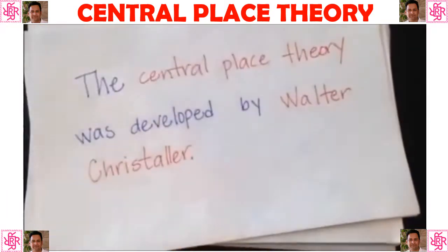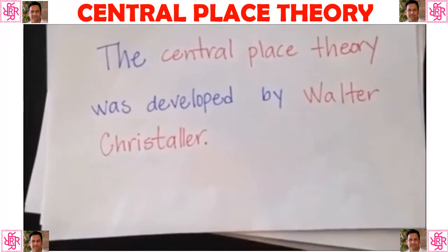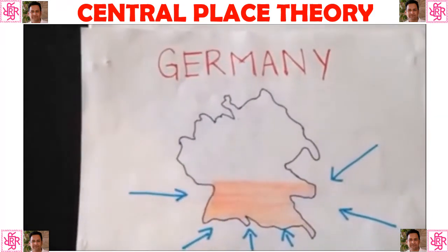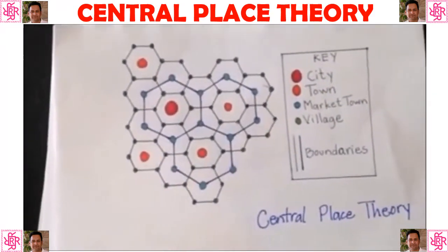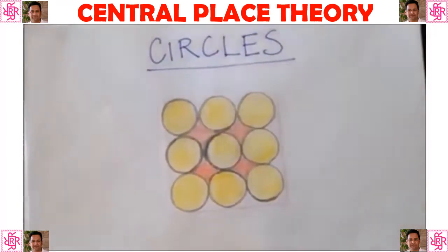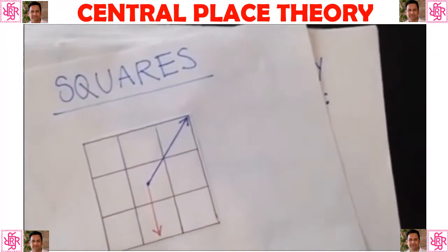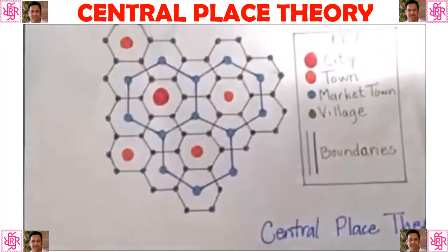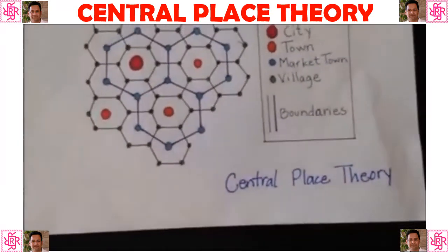Central Place Theory was developed by German geographer Walter Christaller in 1933 by studying settlements in southern Germany, to understand how urban settlements develop and are spaced in relation to each other. The theory is explained using connected hexagons. It does not use circles or squares because circles have equal distance from center to edge but overlap or leave gaps, while squares connect without gaps but sides are not equal from the center. Geographers use hexagons because they offer a compromise between the geometric properties of circles and squares.